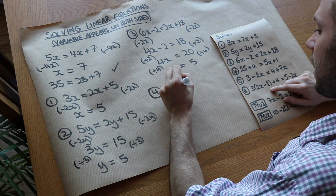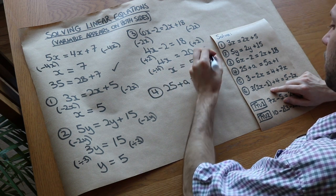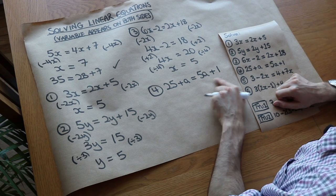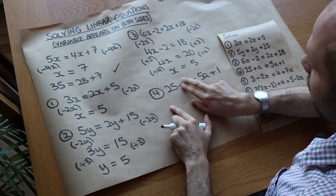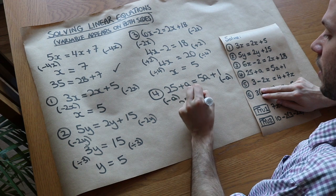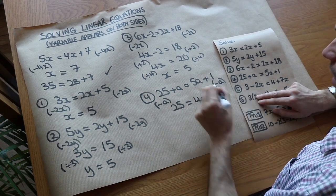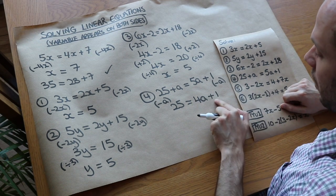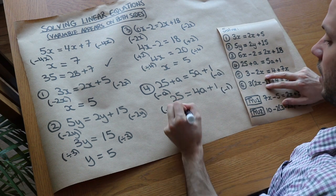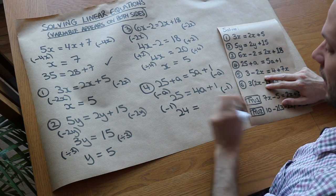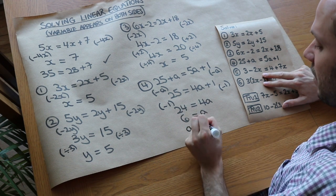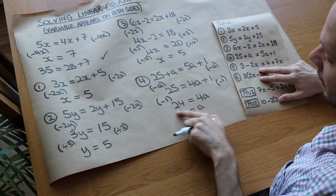We've got 25 plus a is equal to 5a plus 1. Are there more a's on the right or left? We've got 5 lots of a on the right and only 1 on the left, so we collect on the right by subtracting a from both sides. That leaves 25 on the left, and 5a minus a is 4a plus 1 on the right. Then subtract 1 from both sides: 25 minus 1 is 24 and 4a remains. Divide both sides by 4 to get a equals 6.